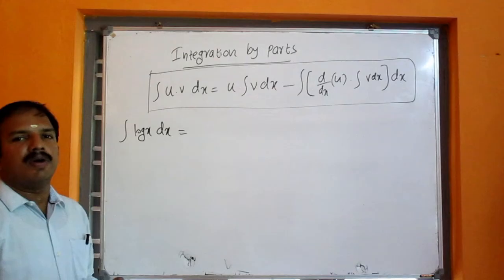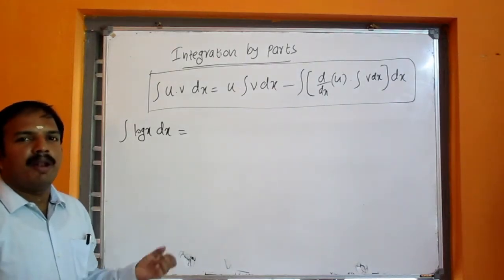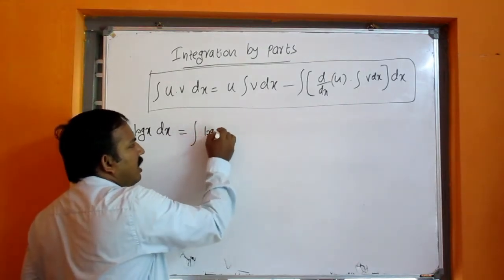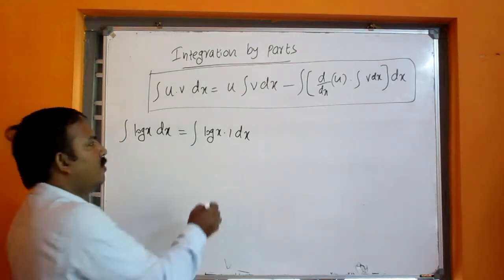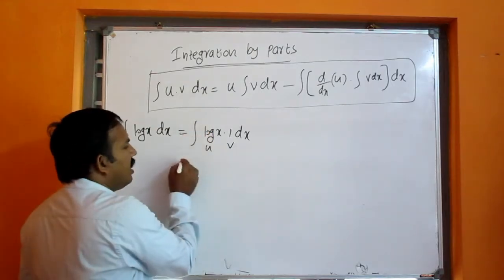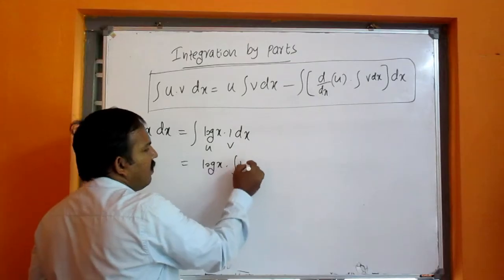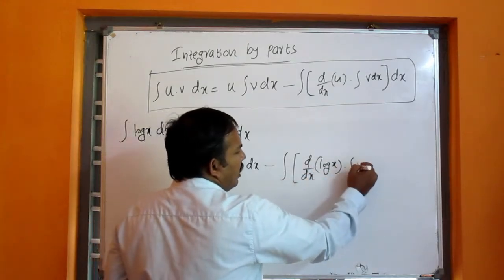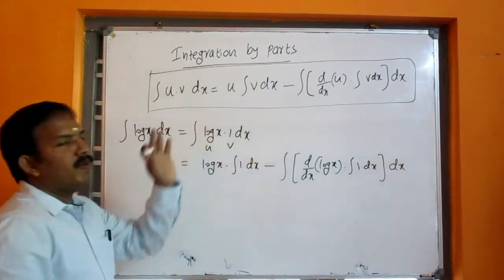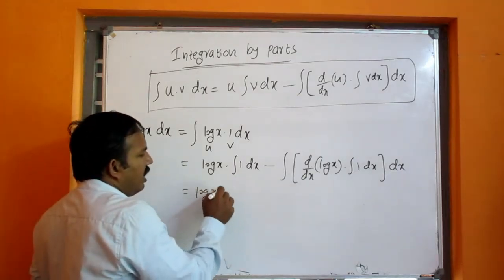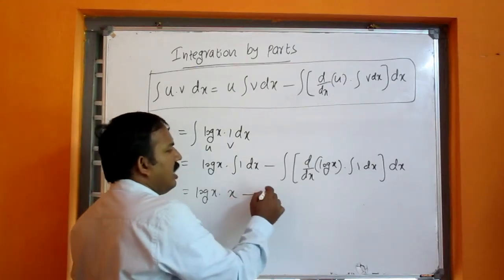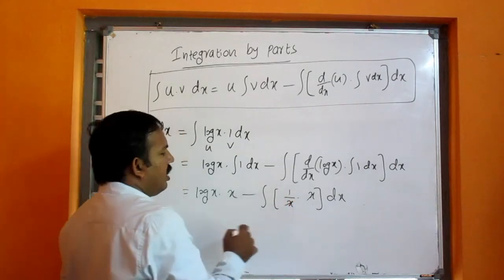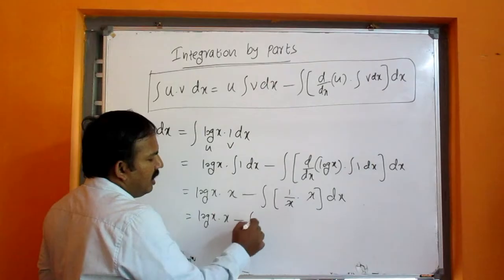Let's look at the integral of log x dx. Log x dx — here we write it as integral of log x into 1 dx. Then u equals log x and v equals 1. So the formula gives: log x into integral 1 dx, minus integral of d by dx of u — that is d by dx of log x — into integral v, which is integral 1 dx. The bracket is closed with dx.